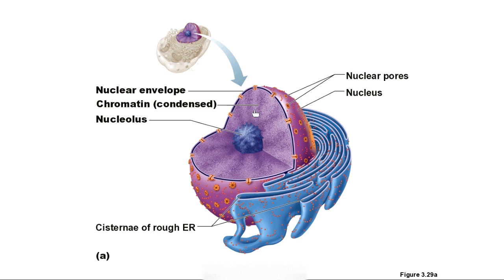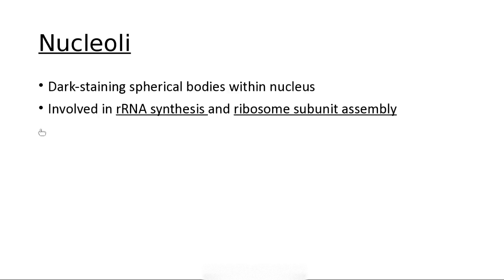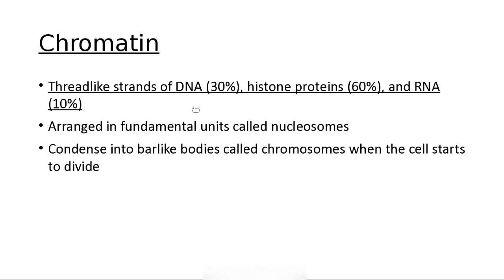The nuclear envelope is just the wrapper, and it has pores in it. It connects to the endoplasmic reticulum with ribosomes. The pores regulate transport of large molecules into and out of the nucleus. Nucleoli are a little dark area — 'little nucleus within the nucleus' — involved in ribosomal RNA synthesis and ribosome subunit assembly. Chromatin is threads of DNA with histone proteins and RNA, arranged in units called nucleosomes, which condense into chromosomes when the cells get ready to divide.